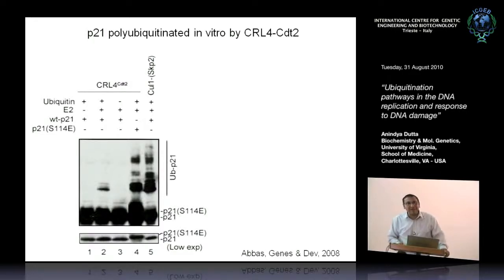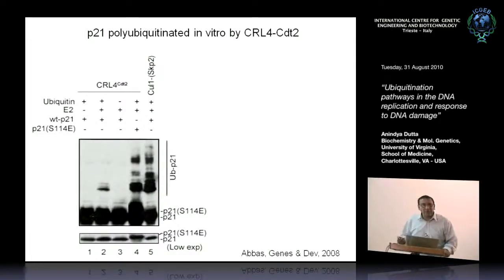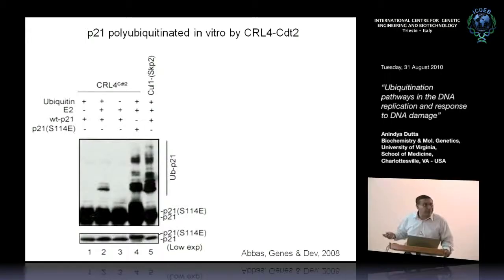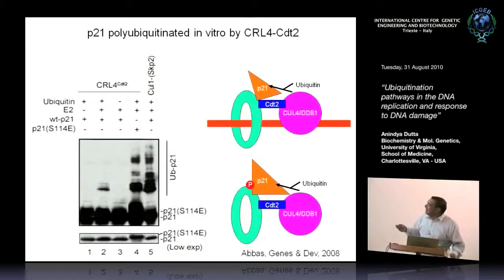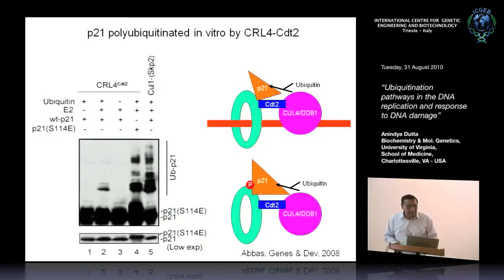Here is the evidence for in vitro polyubiquitination of P21 with CUL4-CDT2 and the E2 — you get weak polyubiquitination. Nobody was very happy with this until we found in the literature that serine 114 of P21, phosphorylated by the JNK pathway, was implicated in the degradation. So we converted serine to glutamic acid to mimic the phospho-state, and now we got very nice polyubiquitination of P21. What we think is happening is that P21 needs to be phosphorylated to promote its interaction with PCNA in a way that facilitates polyubiquitination. This data is already published.